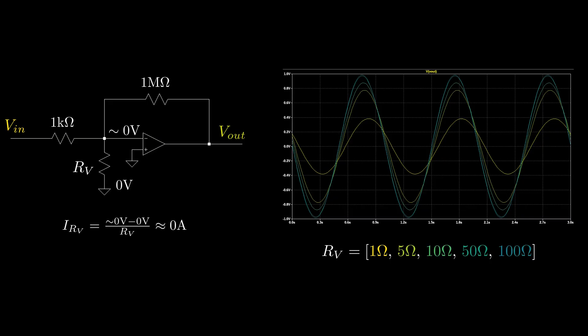If you know what bootstrapping is, that's a similar concept, and is what allows us to ignore Rb. Passive components that have no voltage drop across them can be treated as open circuits.